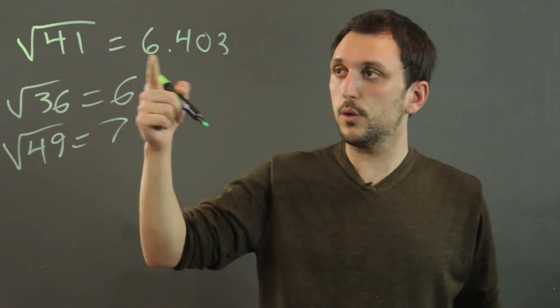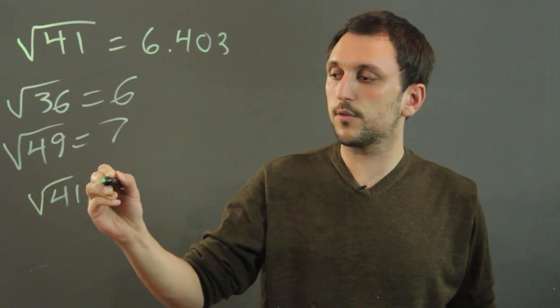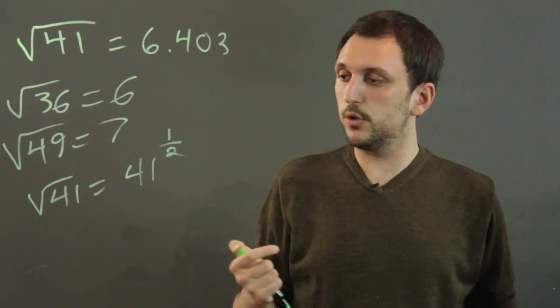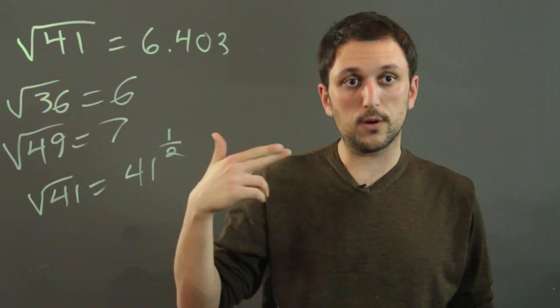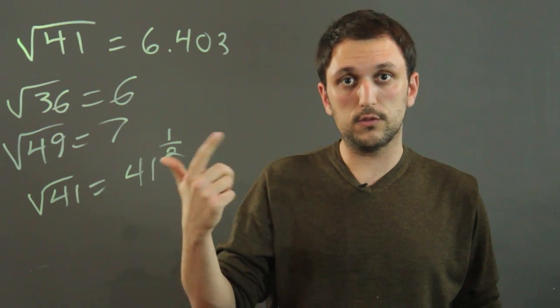You can take the square root of 41 and call it 6.4, or the square root of 41 can be expressed as 41 to the 1 half power, because when you're doing exponents, the numerator is the power and the denominator is the root.